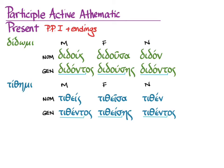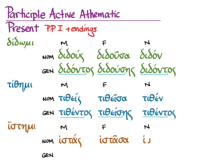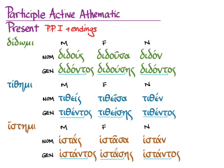For histemi, for the present active participle, you need to learn these nominatives: histas, histasa, histan, and then for the genitive, histantos, histases, histantos, which makes the stems histant-, histas-, histant- to decline in the third, the first, and the third declension. If you look at the genitive, you will see the short stem that you've gotten used to from the present system of mi-verbs. But as you can see if you look at the nominatives, it really just makes sense to memorize these. So for didomi, the present active participle is didous, didousa, didon, didontos, didouses, didontos.